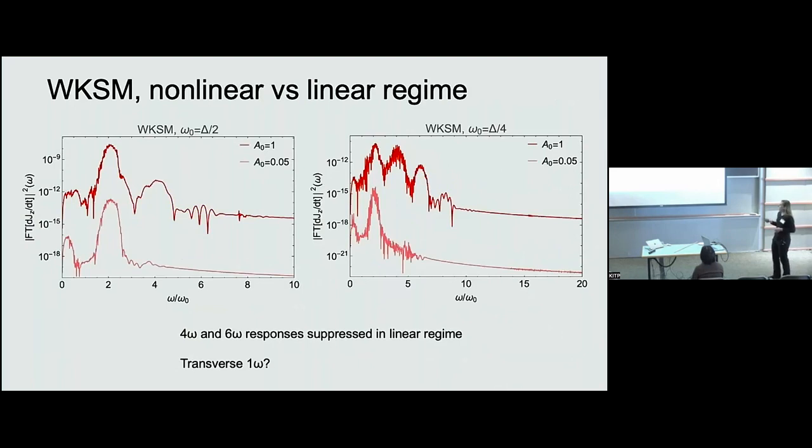So basically these higher harmonic responses, there's some sort of cutoff between these two intensities that lead to this drop off. In the Weyl Kondo semi-metal case we can do the same sort of study. But we can see that indeed the four omega and six omega responses drop off outside of the nonlinear regime. And it's hard and you have to squint at one omega but there does seem to be. There might be something it's very difficult to say.